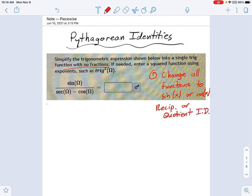Those reciprocal quotient identities tell you how to turn secant into sines and cosines. And once you do that, then we're going to simplify a little bit.